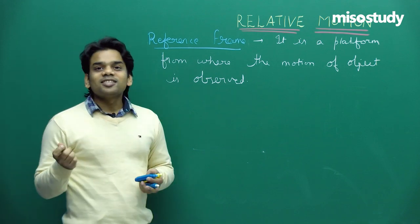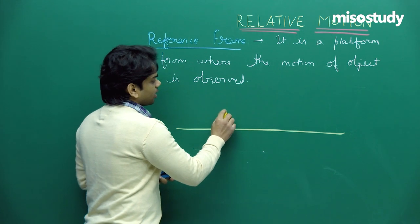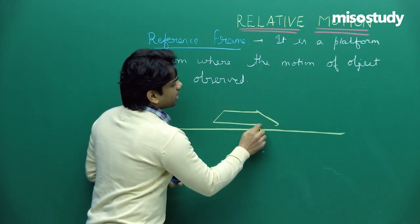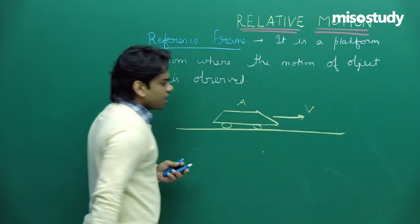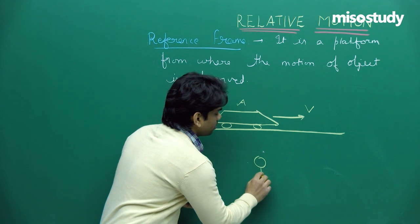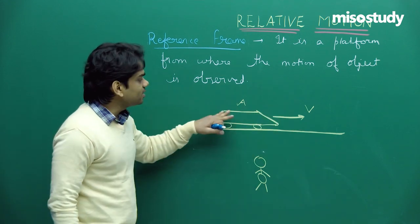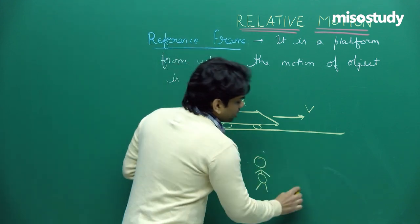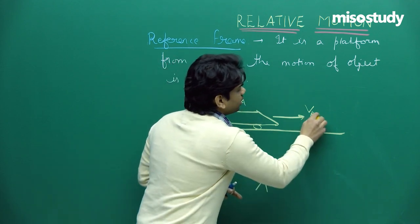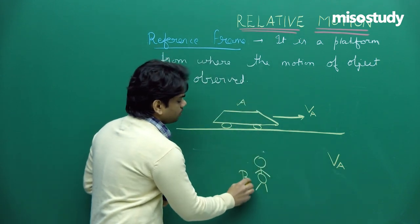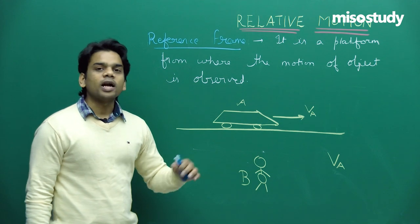Let's take an example. Suppose there is a straight road, a car A moving towards the right with some velocity VA, and you are standing stationary beside the road. If I ask you the velocity of car A, you will simply tell me it is VA. Now suppose you also sat in a car and started moving along the same direction.